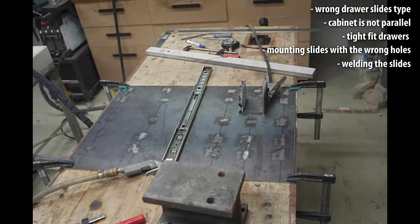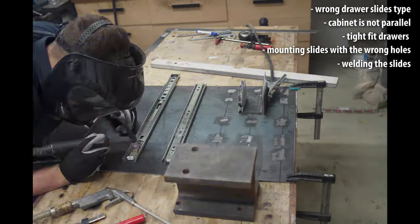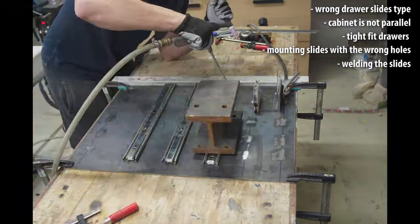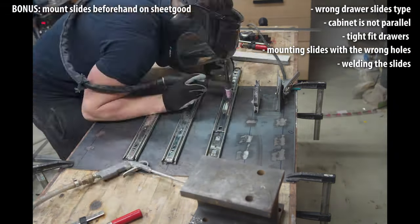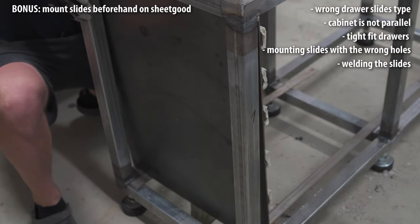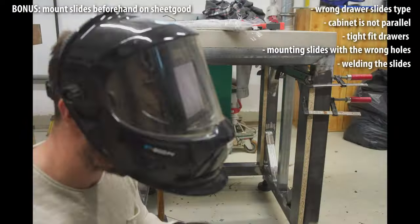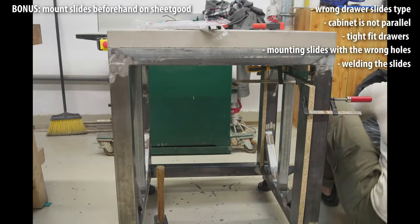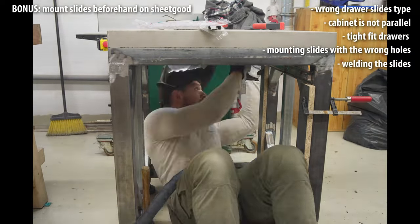Bonus tip: design your cabinet in such a way you can mount the drawer slides beforehand on a sheet of metal or wood on the workbench in a comfortable position, and later secure the sheet with the slides to the rest of the cabinet. Trust me, you don't want to experience weld splatter when trapped inside a metal frame.